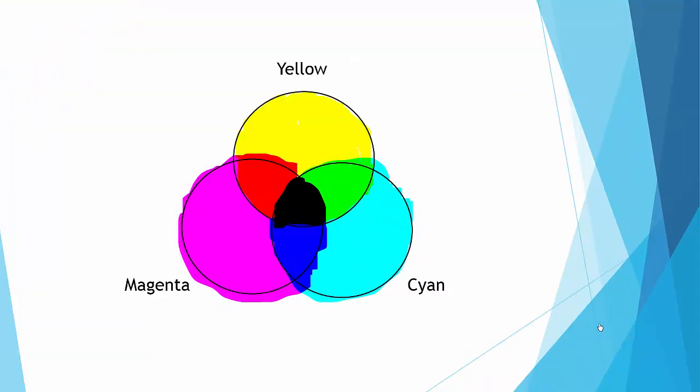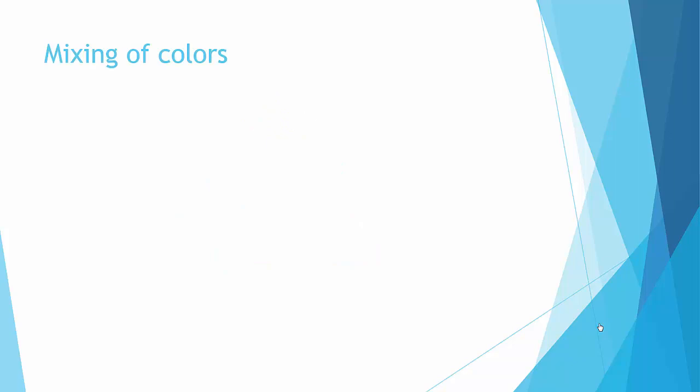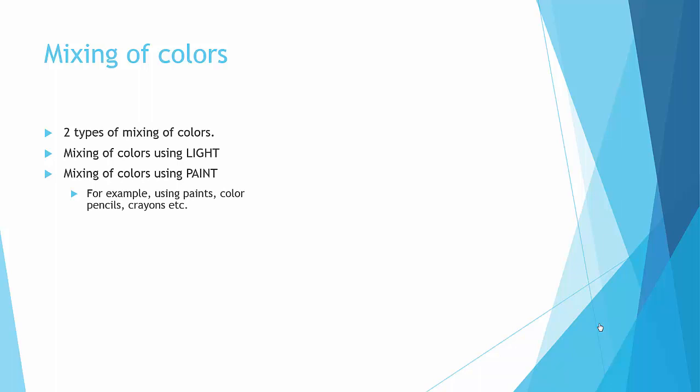So why does this happen? In fact, there are two types of mixing of colors: mixing of colors using light, which we have gone through before, and then there are mixing colors using paint, for example using paint of color pencils and crayons.